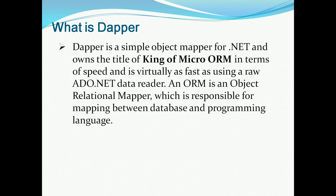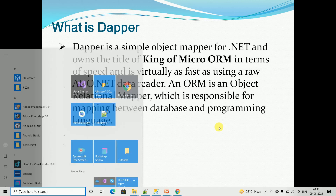Dapper is almost similar to Entity Framework, but it wraps ADO.NET. The ADO.NET query concept is wrapped. We will see the object-relational mapping. So Dapper is nothing but a simple object-relational mapper, which is responsible for mapping between the database and the programming language. So let's start with an example.